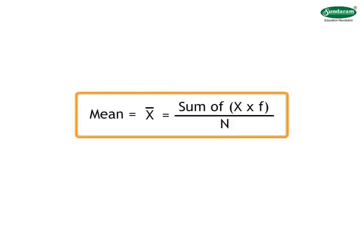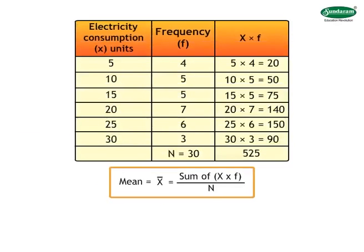Let us solve another example. Example 2: The daily electricity consumption of an office on each day in the month of September is given in the table on the screen. Calculate the daily average electricity consumption of the office. In the first column, we write all the units range, from 5 units to 30 units and this is taken as X. In the second column, we write the number of days these units are used, that is, frequency. We mark it as F.